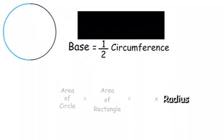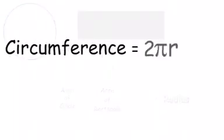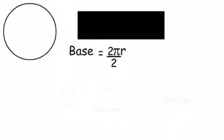Remember that the circumference is equal to 2 pi r. When we combine it with one half, the 2's cancel out, and base is equal to pi r.